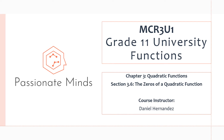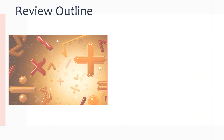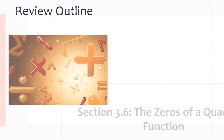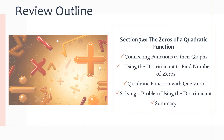Hello everyone, welcome back to another MCR3U1 video. In this video we will be going over section 3.6 on the zeros of a quadratic function. We want to learn connecting functions to their graphs, use the discriminant to find the number of zeros of a quadratic equation, look at quadratic functions with only one zero, solve problems using the discriminant, and then go over a quick summary.